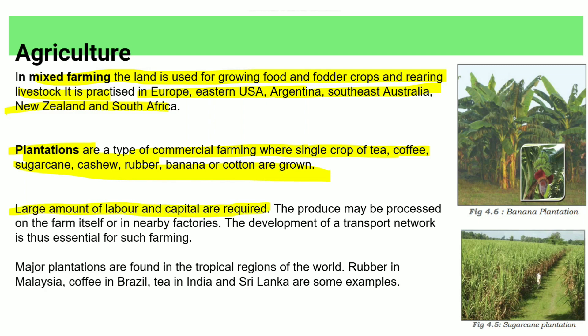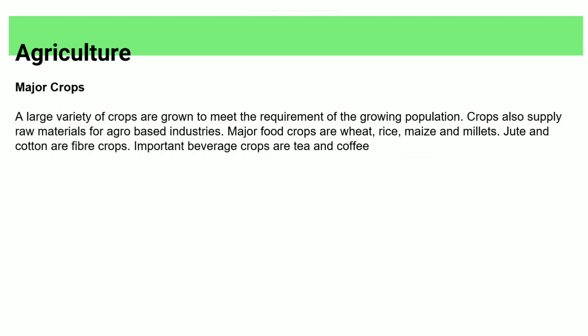Plantations require large amounts of labour and capital. Produce must be processed nearby in factories with good transport facilities. Major plantation crops include rubber, coffee, tea. Major food crops include wheat, rice, maize, millet, jute, and cotton.